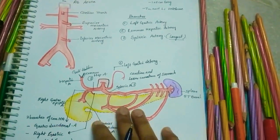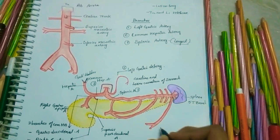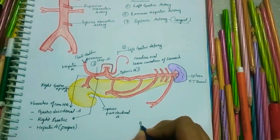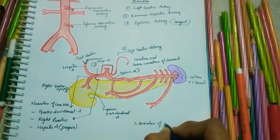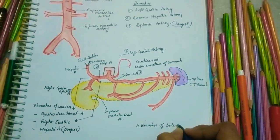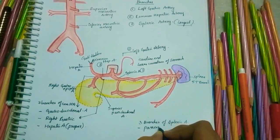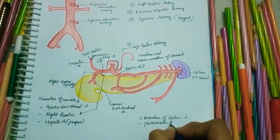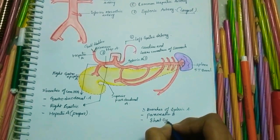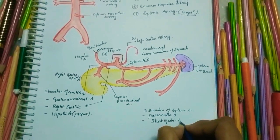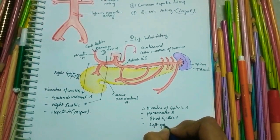In addition to the five terminal segmental branches to the spleen, the splenic artery gives off the following branches: pancreatic branches, short gastric arteries, and the left gastroepiploic artery.